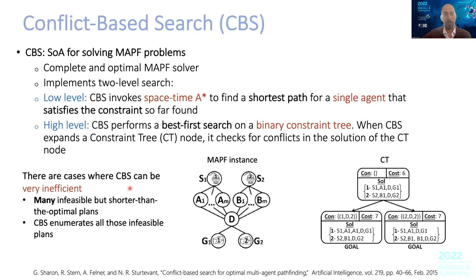There are cases where, for example, agent 1 wants to go to G1 and agent 2 to G2 — they will collide at a point T. So one of them has to wait; you can see there is a collision at the third time step because both go to D. In this case, you create a path, fix the path of one agent, and put that as a constraint for the other. One has to wait before the other moves, and you construct this constraint tree and follow it to find the optimal solution. But it turns out this is inefficient because you may get many suboptimal paths and have to go through all of them.